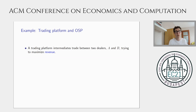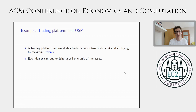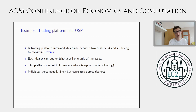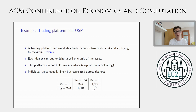In the simple example, we look at revenue maximization with OSP as a solution concept. There is a trading platform that intermediates trade between two dealers, A and B, and the platform is trying to maximize revenue. Each dealer can either buy or sell one unit of the asset, and the platform doesn't hold inventory so it has to clear the market. Each dealer has two possible values: dealer A has a value of zero or two-thirds, dealer B has a value of one-third or one. These values are positively correlated, and this is the joint distribution.